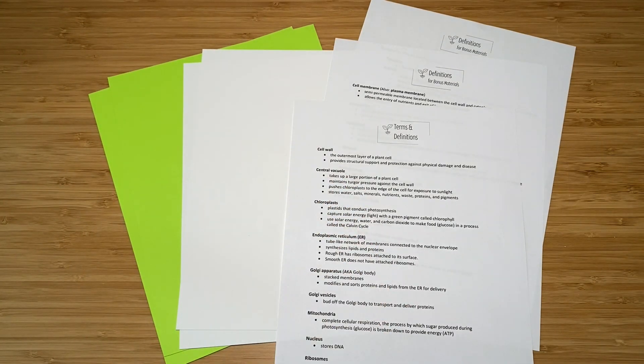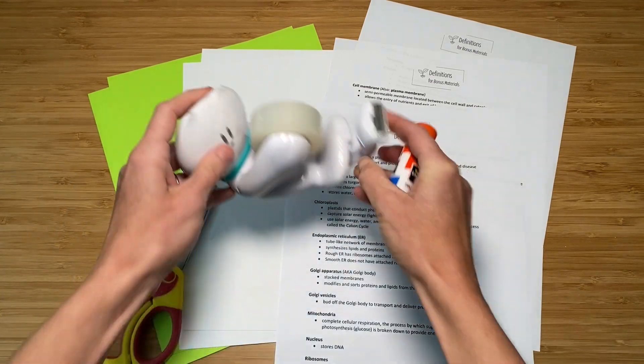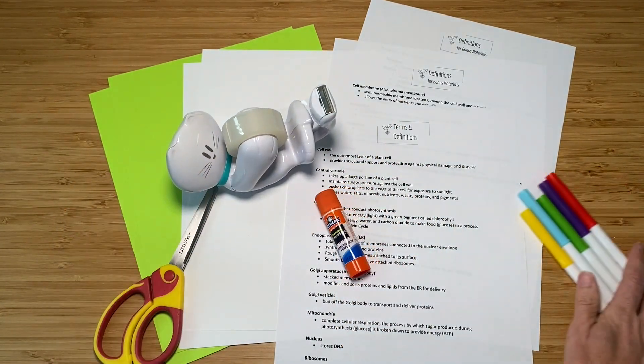You'll need two sheets of paper or cardstock for the cell wall, two more for the parts of the cell, and if you'd like to print the definition you'll want a couple more pages. You'll also need scissors, tape, glue, and something to color with.